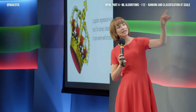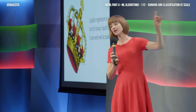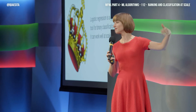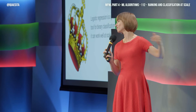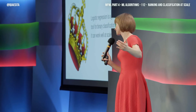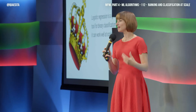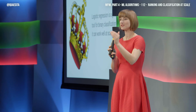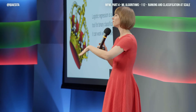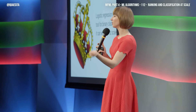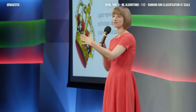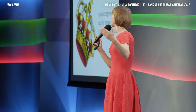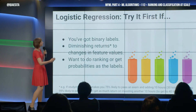It can also work not only for binary labels — there's a version that works for multi-class classification, and that is multinomial logistic regression. So it's not only pass/fail or cat/not-cat; you can also use it for cat, dog, bear, elephant, giraffe.